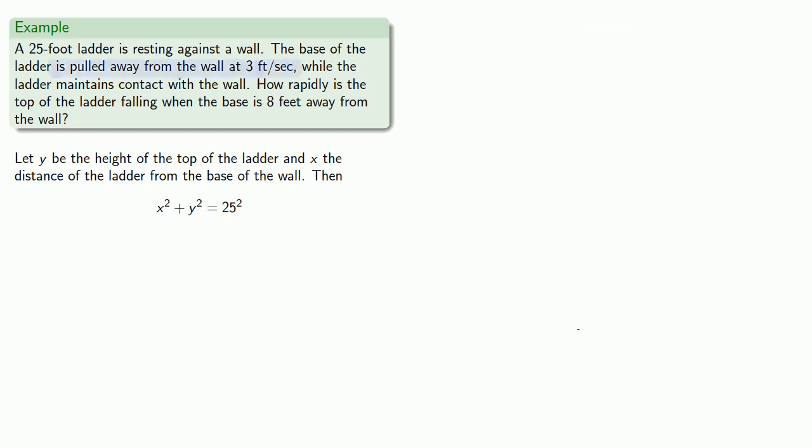So we're told that the base of the ladder is pulled away from the wall at 3 feet per second. And so this is a rate of change of x with respect to time. And so we're differentiating with respect to time, t.